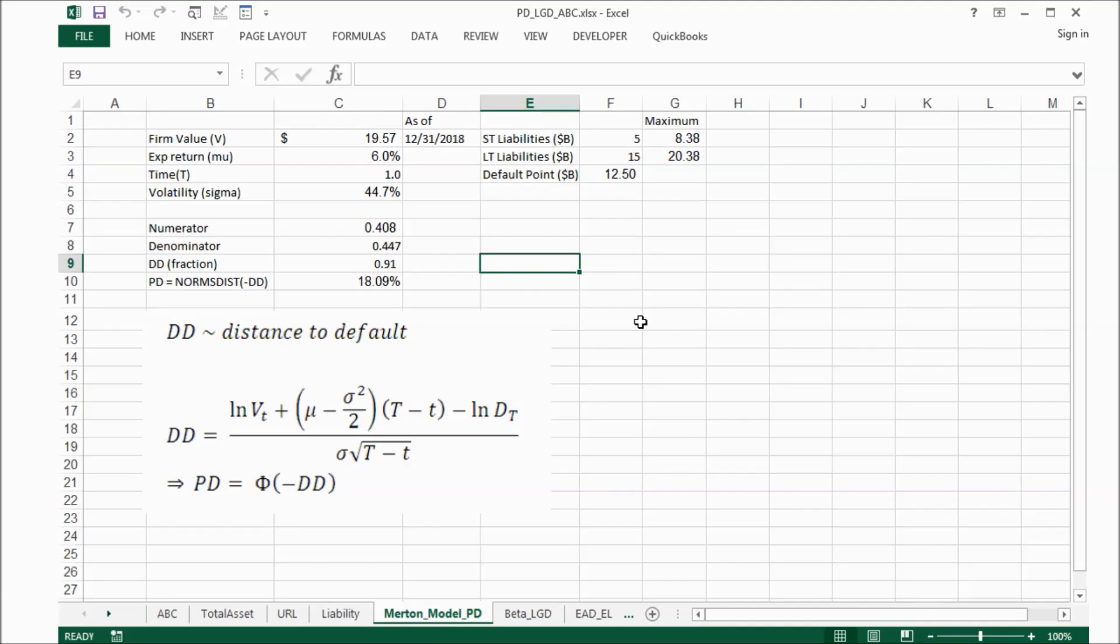Now we come to the spreadsheet to calculate PD according to Merton's model. First of all, the firm value, I put it here. This is came from the financial statement and expected return. I put 6%. This is according to the first 5 years. And the volatility I calculated according to the asset level of this ABC company. You can see the maximum of short-term liability for this ABC company is about $8 billion. And the long-term liability about $20 billion. Now we put the assumption,